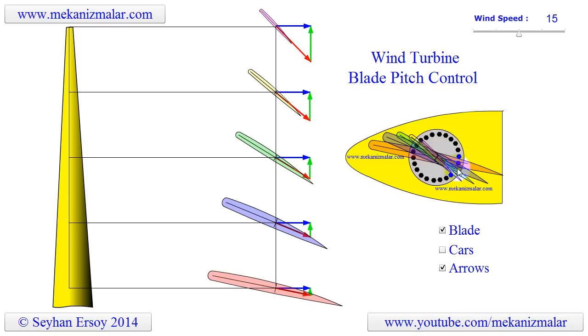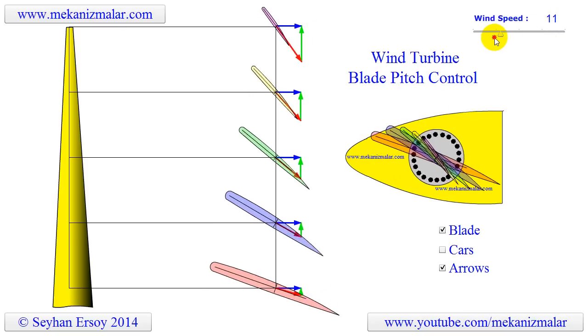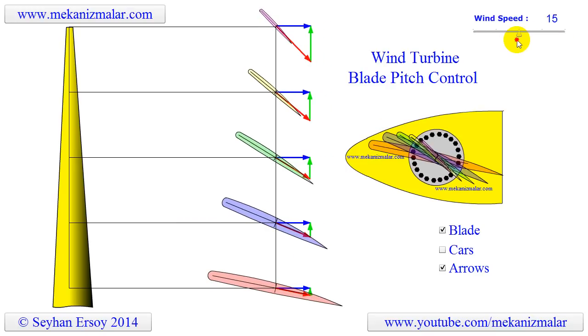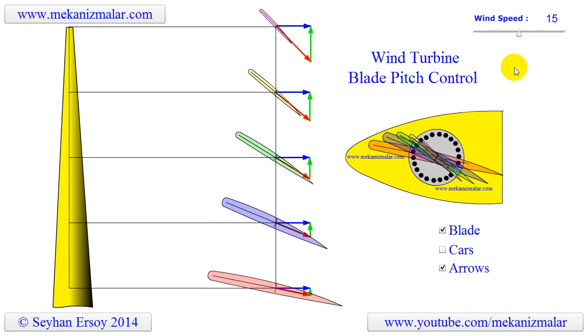When the wind speed changes, the velocity triangles also change as you can see. This means that we should have different blade shapes for all the different wind velocities. It's almost impossible to build a blade which morphs itself to new shape for changing wind velocity. The solution is pitch control.